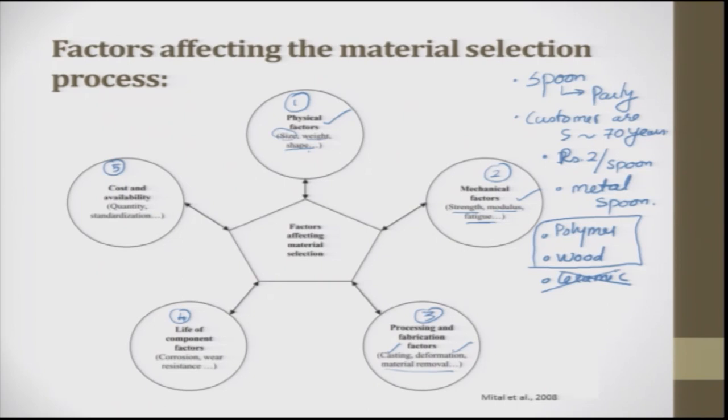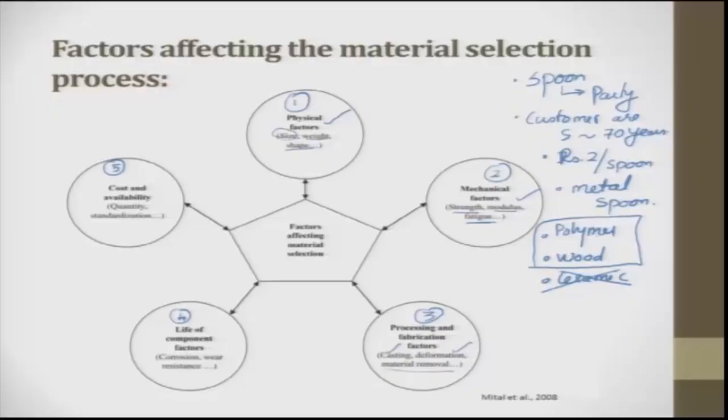The next factor is mechanical: strength, modulus, and fatigue. This is important because when spoons are loaded heavily, they should not deflect. Also, when used in a hot environment, the spoon should not deform quickly. The moment I say it has to withstand heat, the polymer spoon is eliminated. I am left with wood, since wood can withstand all these things. So I move to the next factor.